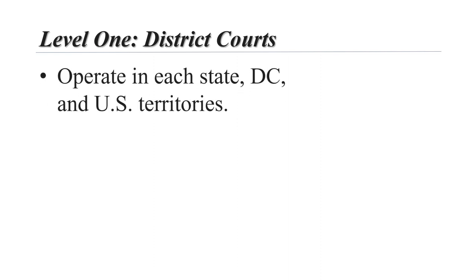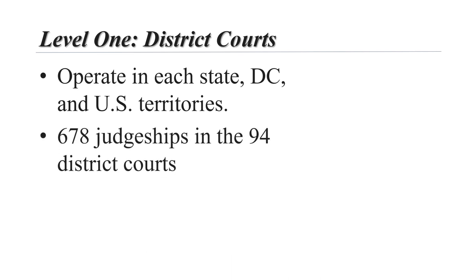Although the Supreme Court and its justices receive most of the public attention and news media coverage, district courts are the workhorses of the federal judiciary. They are also known as the federal trial courts. These courts operate in each state, the District of Columbia, and the United States territories. There are 678 judgeships within the 94 district courts across the country, with at least one in every state.